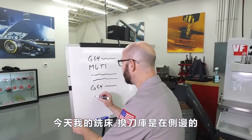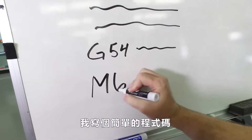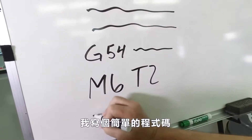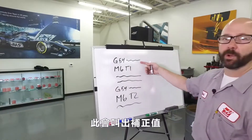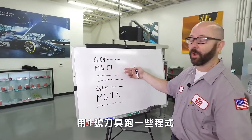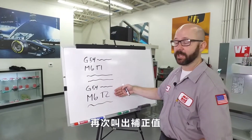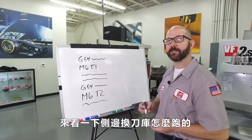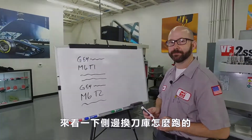Today we're on a machine that has a side mount tool changer, and I've written a simple piece of code here. It's gonna call up my work offset, run some code using tool one, then call my work offset again, and run some more code using tool two. Let's see how the side mount tool changer reacts to this code.